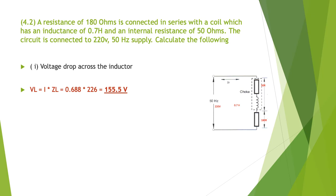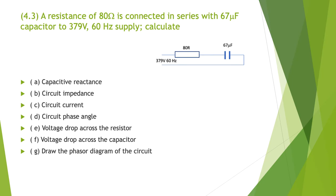So lots of maths there, but once you understand how it works across series circuits with R, L and C, it's reasonably straightforward. Here's another one, very similar, but this time we have a resistor of 80 ohms in series with a capacitor of 67 microfarads. The applied voltage is 379 volts at 60 hertz. Always draw the circuit diagram — make sure you get the picture in your head correctly.